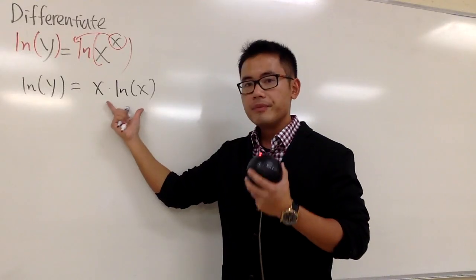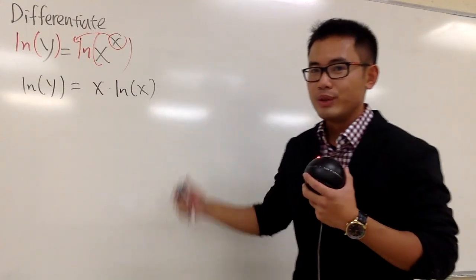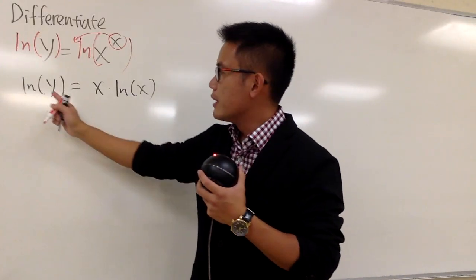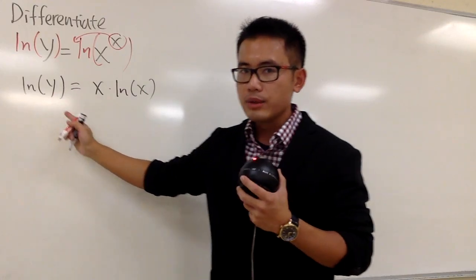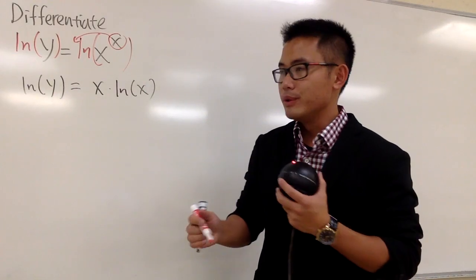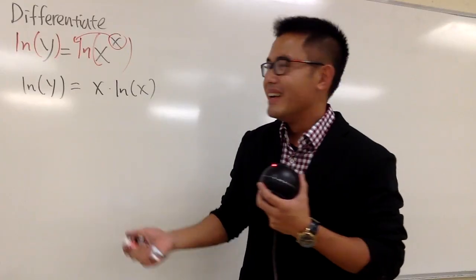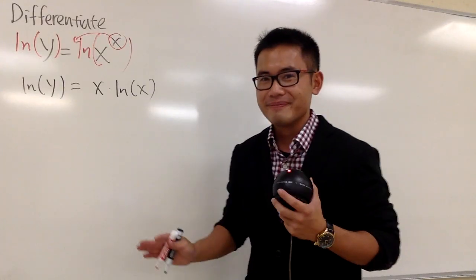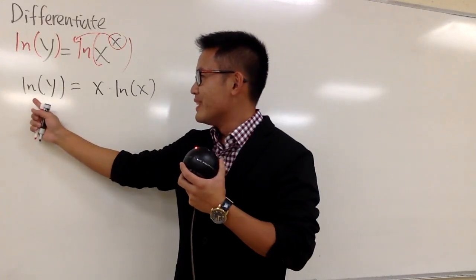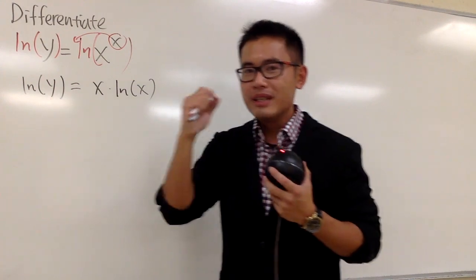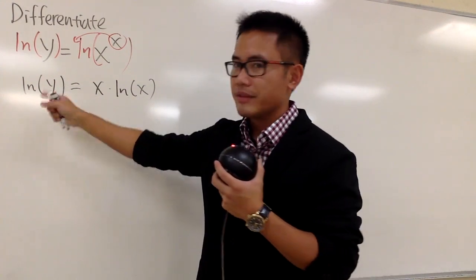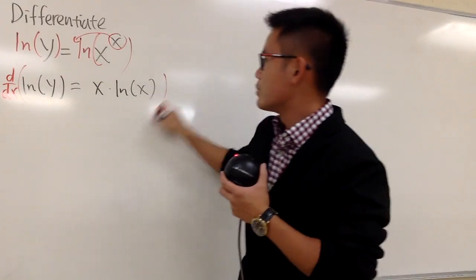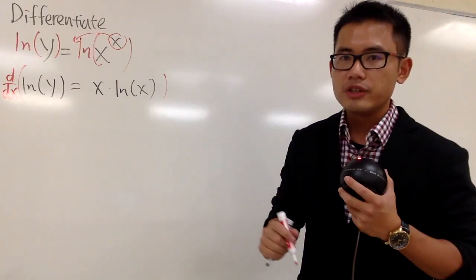Now on the right-hand side, this is just a product of two functions, so we can use the product rule. Here's the trouble though — we have ln y, which is not isolated. What we can do is deal with this using implicit differentiation, because the y is inside of the ln. So I will just put d/dx throughout this equation and do implicit differentiation.